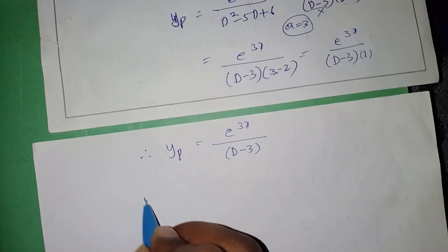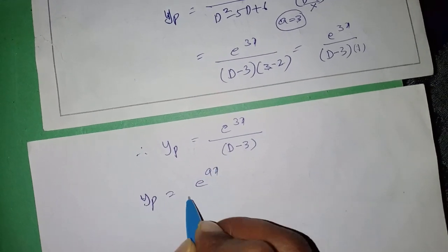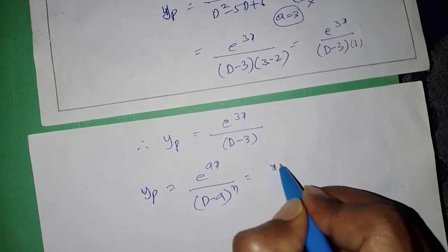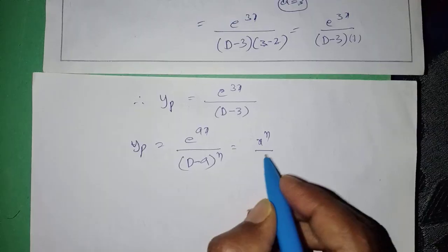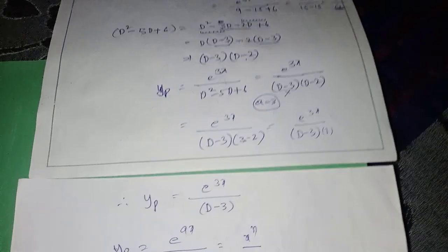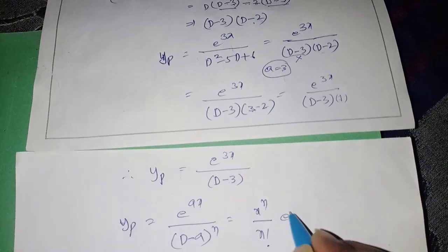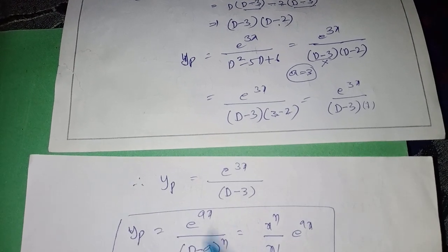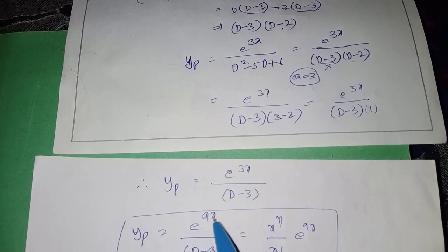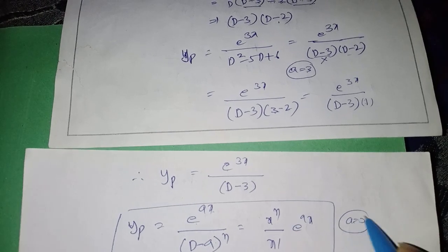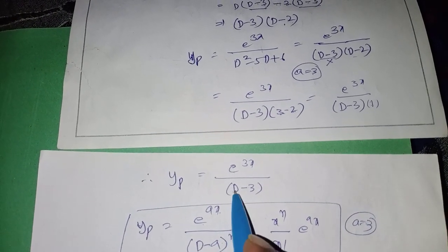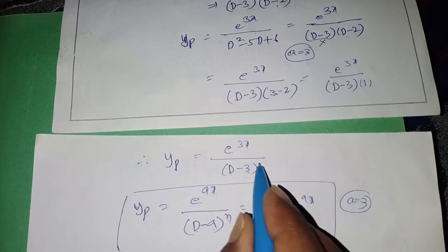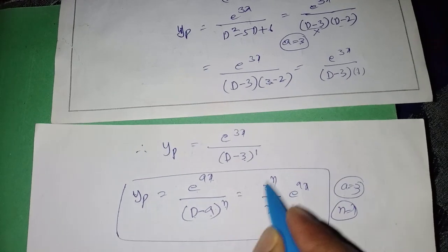We now use the formula: e^(ax) / (D - a)^n = x^n / n! · e^(ax). Comparing e^(3x) / (D - 3) with this formula: a = 3 since the exponent is 3x, and the power n = 1 since (D - 3) appears to the first power.